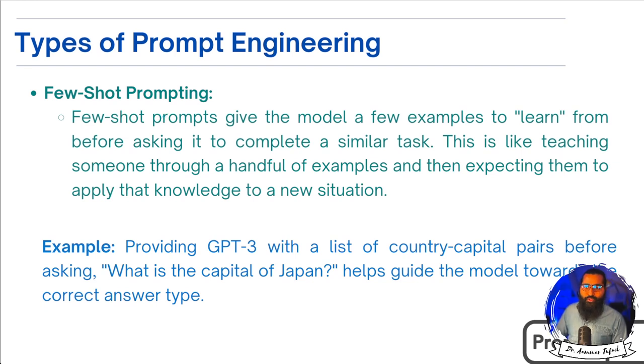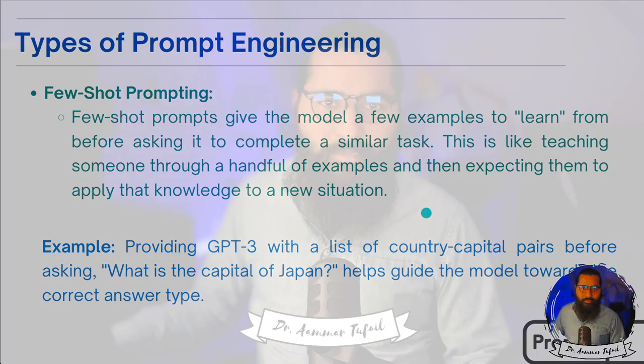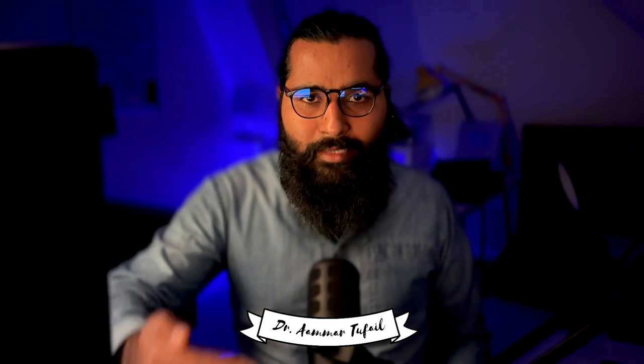Few-Shot Prompting gives the model a few examples to learn from before asking it to complete a similar task. This is like teaching someone through a handful of examples and then expecting them to apply that knowledge to a new situation. For example, if I tell you: 2 plus 2 equals 4, 3 plus 2 equals 5, 4 plus 2 equals 6 — and then ask what is 8 plus 2 — that is called Few-Shot Prompting.